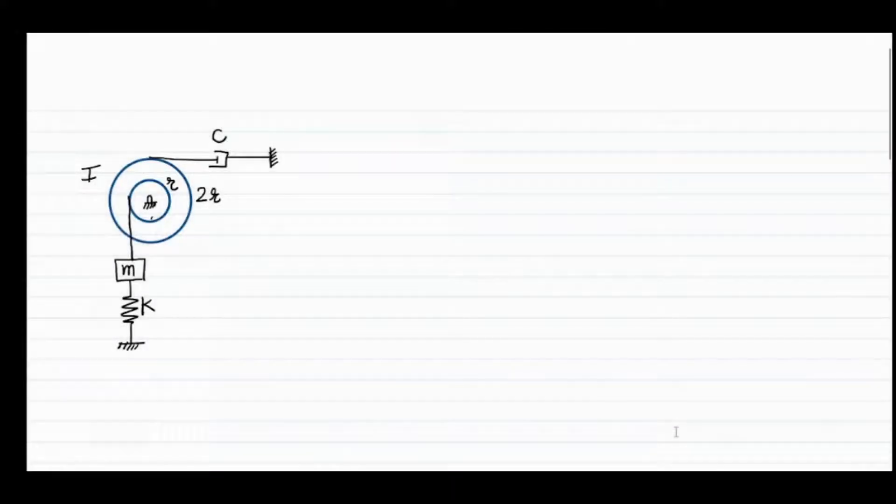In the previous part we derived the expression of equation of motion of the system considering the D'Alembert principle. Now again use this energy principle to write the equation of motion of the system. In case of energy principle we follow the law of conservation of energy, that means we actually write the total energy of the system.